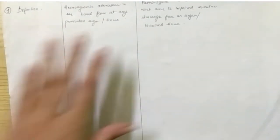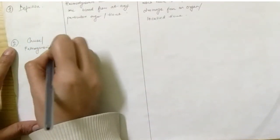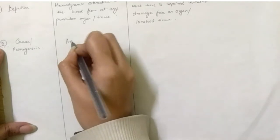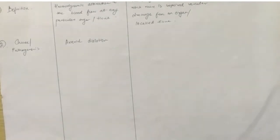So, next point of difference between the two is cause or pathogenesis. Why is hyperemia occurring or why is congestion occurring? Arterial dilation is the cause. If arteries dilate, then more blood will be supplied to that particular organ or tissue.